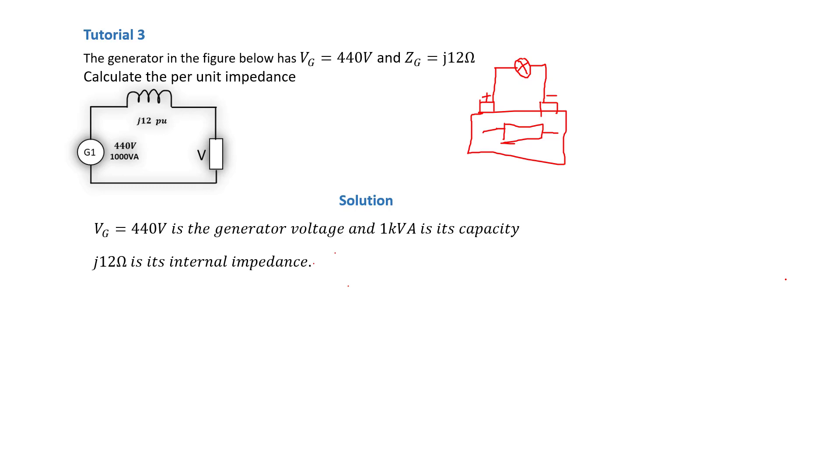So now we've got the generator voltage, we've got the apparent power which is the base apparent power in this case, and we've got the internal impedance.